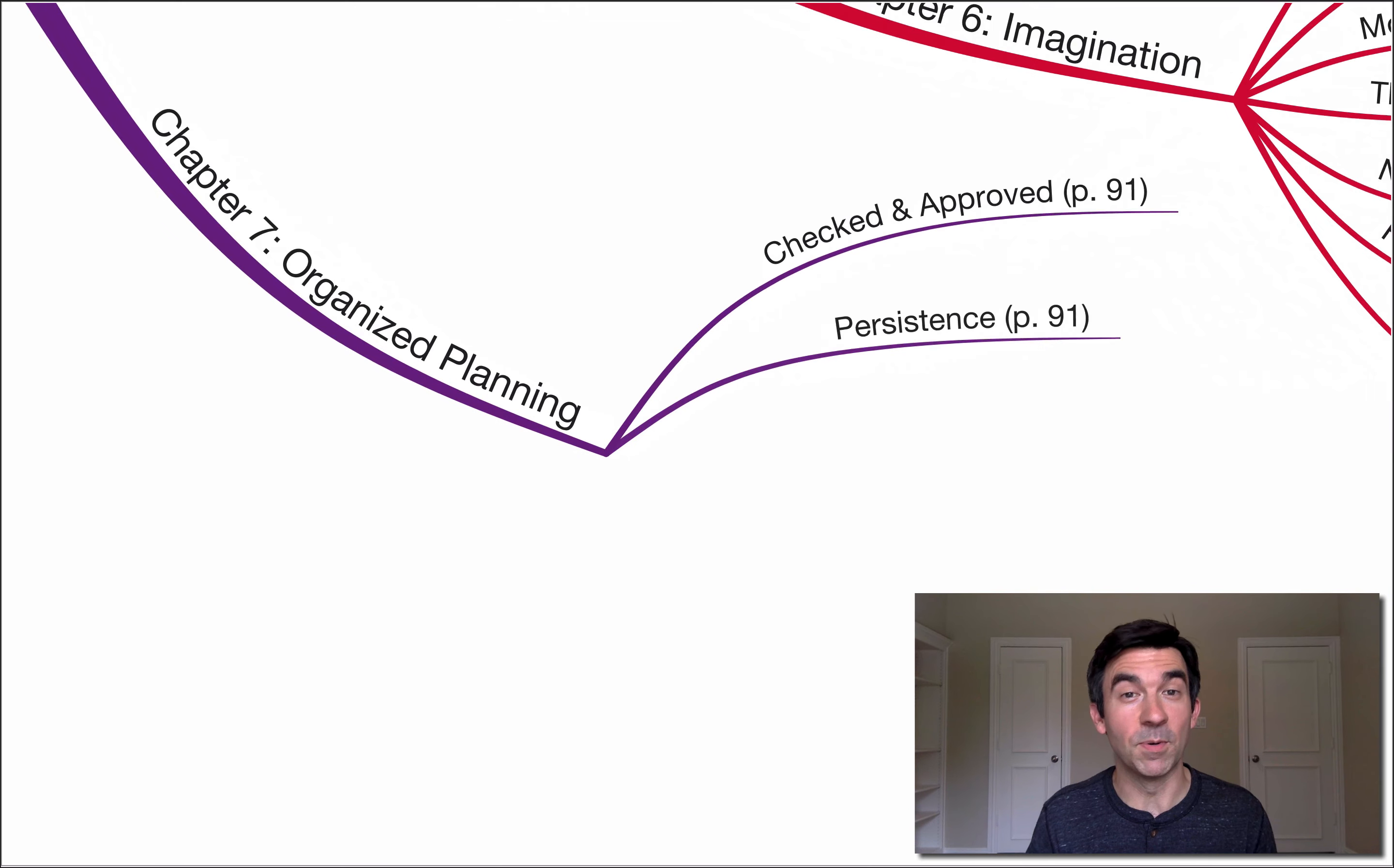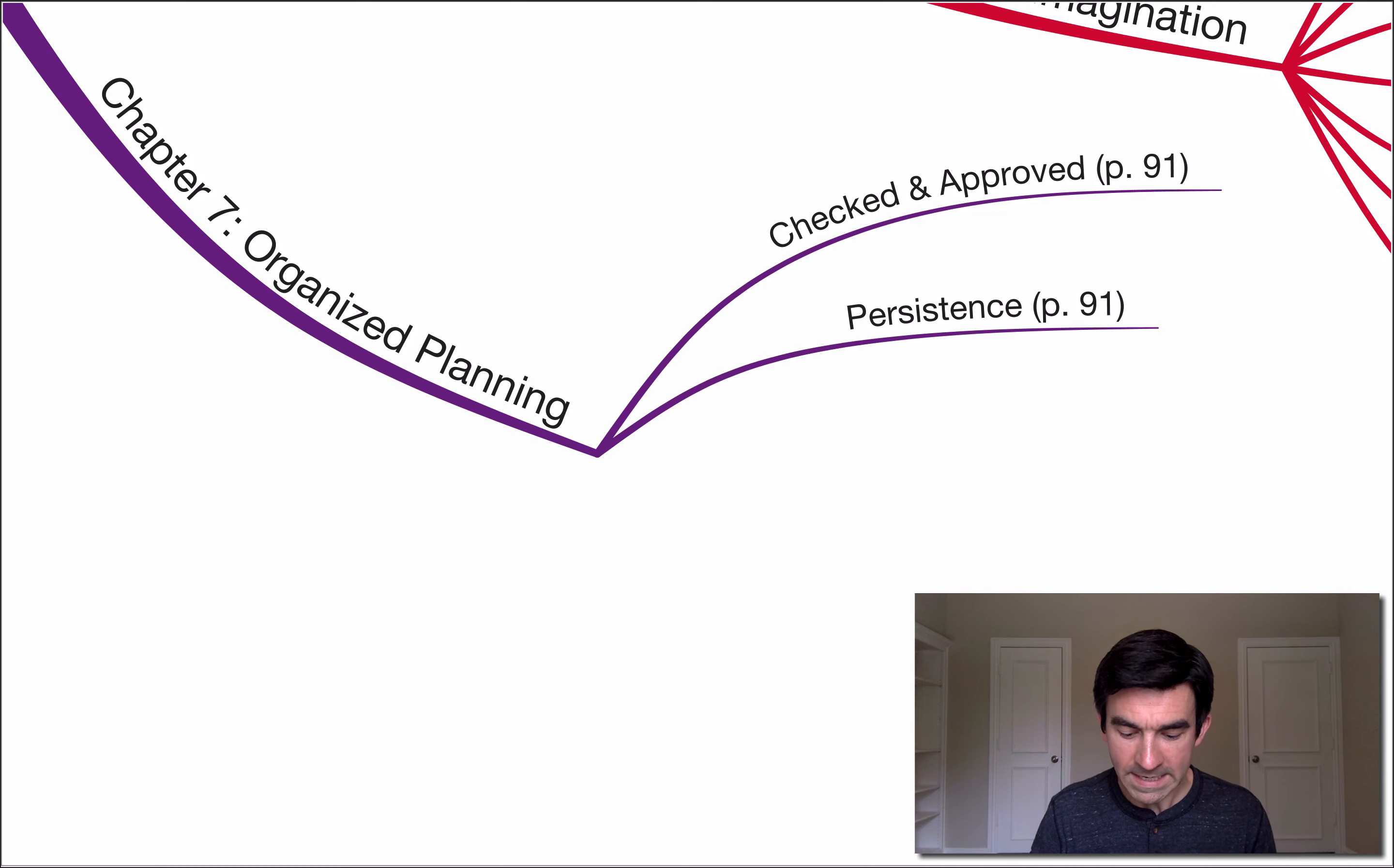the same common objectives that you have. Second key point here is persistence, again, on page 91. If the first plan which you adopt does not work successfully, replace it with a new plan. If this plan fails to work, replace it in turn with still another, and so on until you find a plan which does work. Right here is the point at which the majority of men meet with failure because of their lack of persistence in creating new plans to take the place of those which fail. So again, this is another chapter we're talking about here, this idea of persistence.